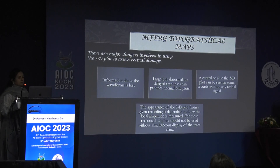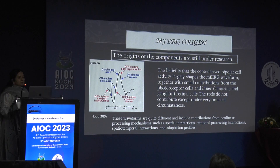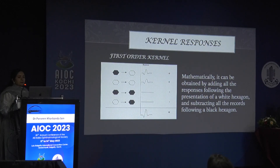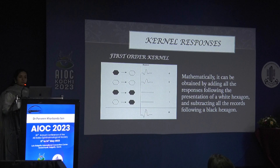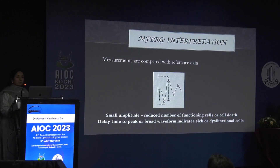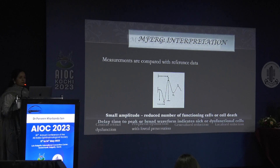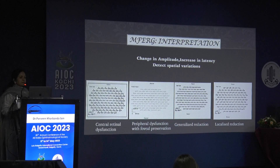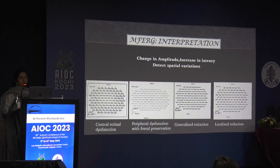In multifocal ERG, responses depend not only on whether the current stimulus was dark or bright, but also on the prior stimulus — these are first order kernel responses. Regarding interpretation: reduced amplitudes indicate fewer functioning cells; increased implicit times suggest cells are present but not functioning optimally. Importantly, the spatial arrangement tells you whether dysfunction is central, widespread, or localized to a particular field.